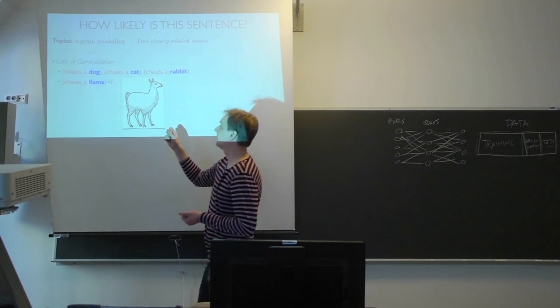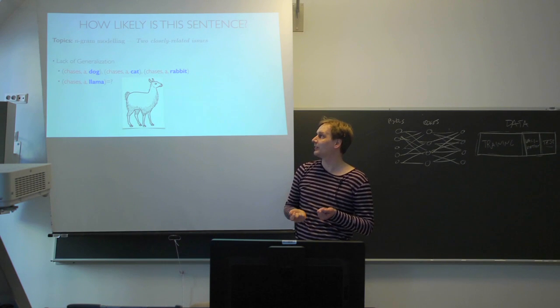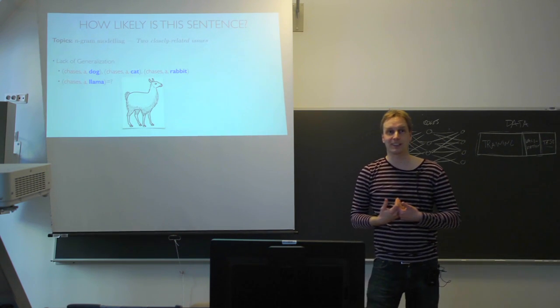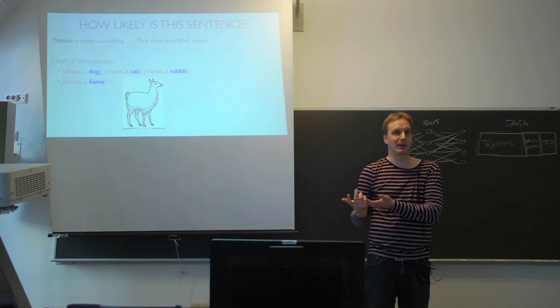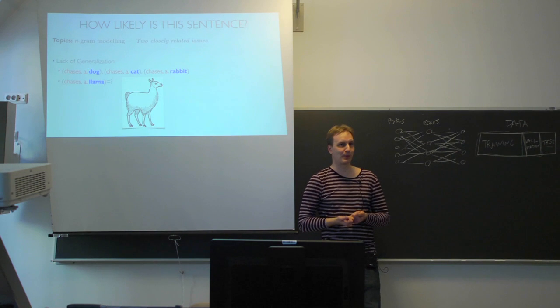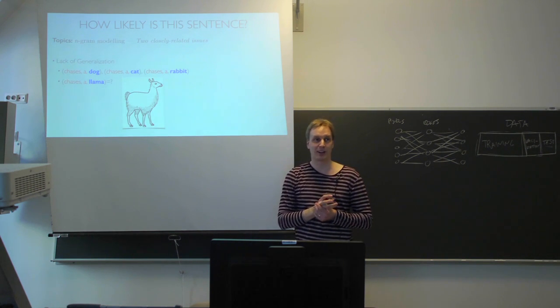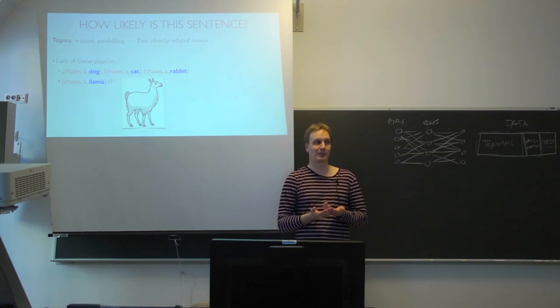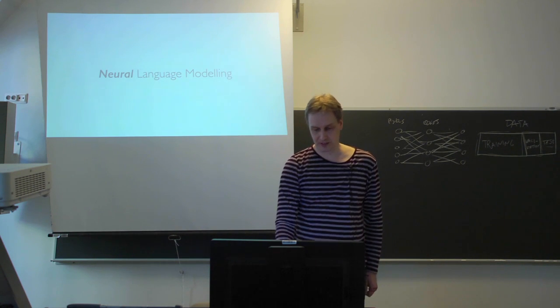Let's say, in text you might have chases a dog, chases a cat, chases a rabbit, but you don't have chases a llama. You don't have it in your training data. But if you know that the llama is an animal, like a rabbit or dog or a cat, then sometimes after chases a, there's some kind of an animal. It would be possible to say that chasing a llama is a reasonable phrase just because a llama is somewhat similar to dog, cat or rabbit. And these n-gram models cannot do this generalization. They consider each word completely separate from each other. So something better can be done.